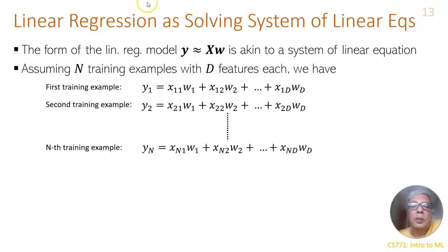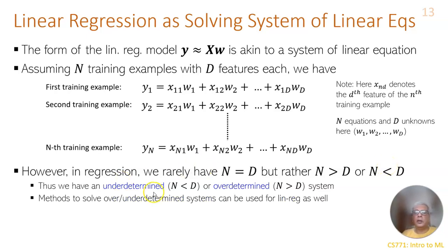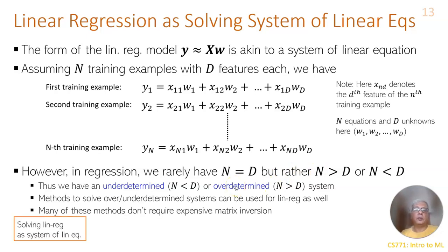Suppose we have a simultaneous equation y1 equal to w transpose x. If it is rarely the case, the number of observations is equal to the number of parameters, so that we can solve it. If N is less than D then it is called underdetermined. If N is bigger than D it is called the case of overdetermined.